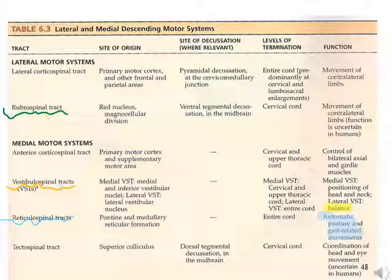Other descending tracts include the rubrospinal tract, which helps with limb movement coordination; the vestibulospinal tract, which helps with body position and balance; and the reticulospinal tract, which helps with automatic posture and related movement.